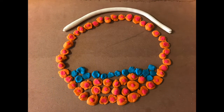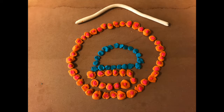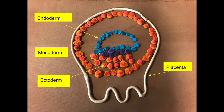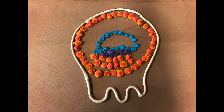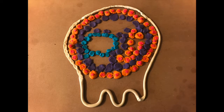The inner cell mass then turns into two different types of cells: the hypoblast and the epiblast. The hypoblast is also known as the endoderm, and the epiblast is also known as the ectoderm. The hypoblast and the epiblast then begin to migrate up within the blastocyst. Then the mesoderm begins to form between the endoderm and the ectoderm. In addition, the placenta begins to form around the outside of the blastocyst. The mesoderm then begins to form around the endoderm, ectoderm, and the inner layer of the blastocyst.